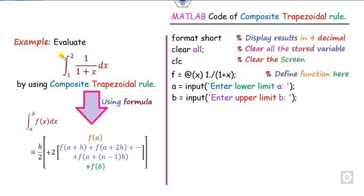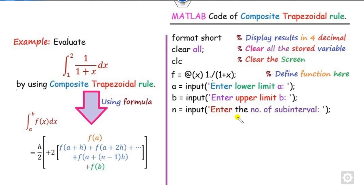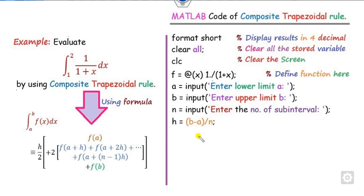After that, define the upper limit B, also taken as user input — enter the upper limit. Then there is a need for N, the number of sub-intervals — enter the number of sub-intervals. You can set it to 20 or 10 as per your convenience. Once these are defined, we can start the MATLAB code: define H as B minus A divided by N.